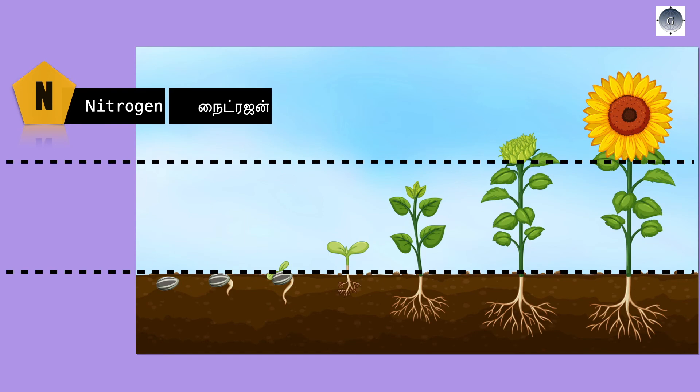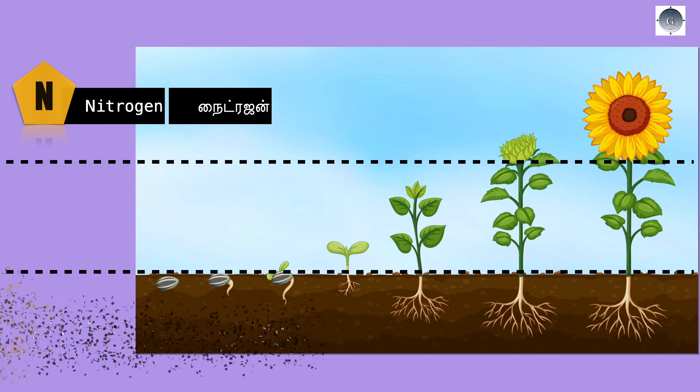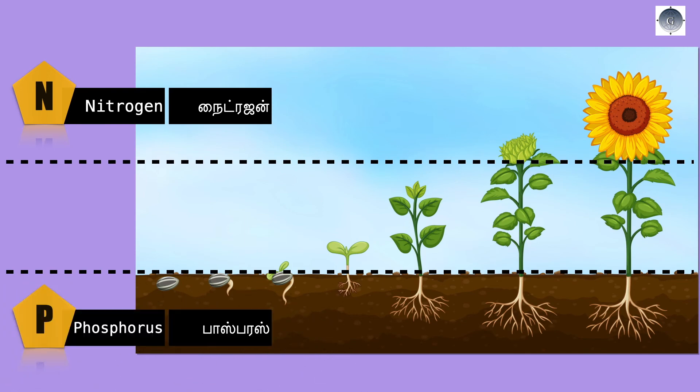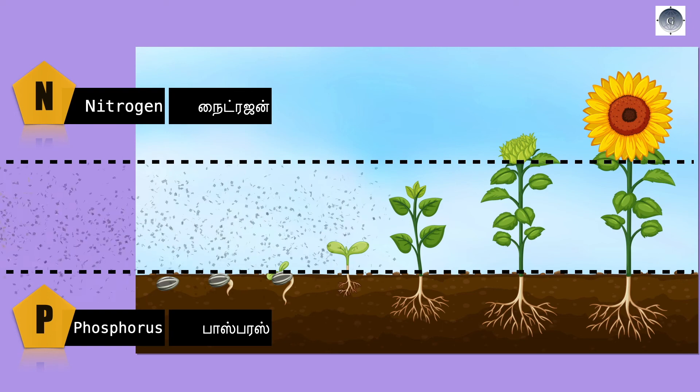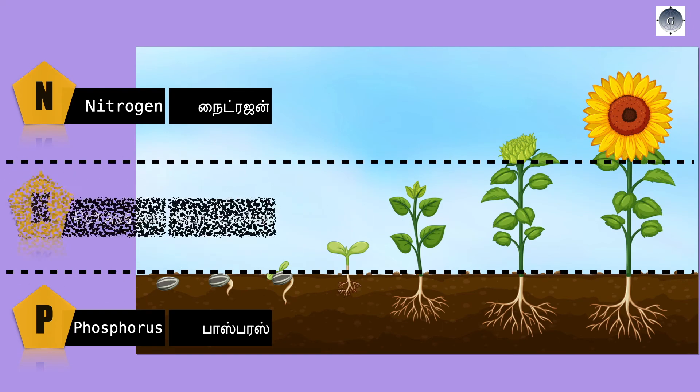The first thing we are going to take a look at is nitrogen, phosphorus, and potassium. These are the 3 things we are going to take a look at.